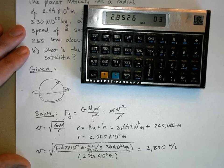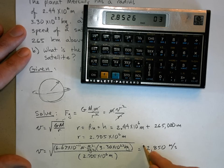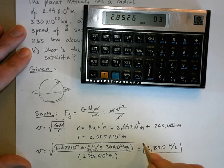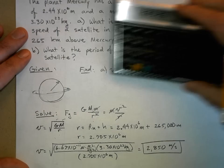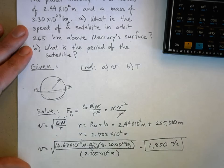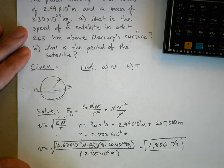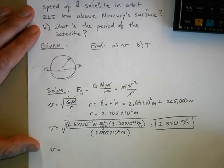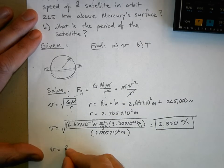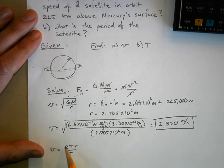So that's for part A. Now the period. We know the velocity is equal to 2 pi r over the period. It's a circular orbit, so this is the circumference of a circle divided by the time it takes to go around once. That's called the period, and that'll be equal to our speed.